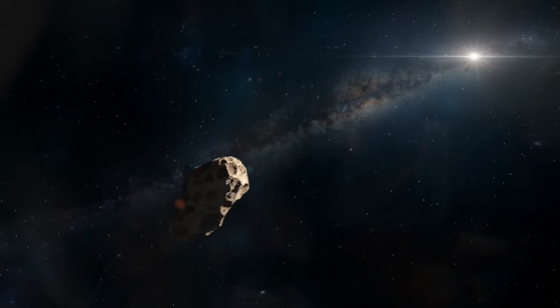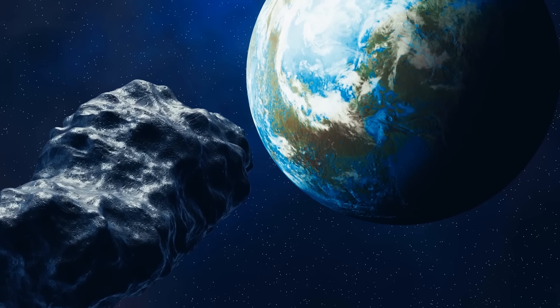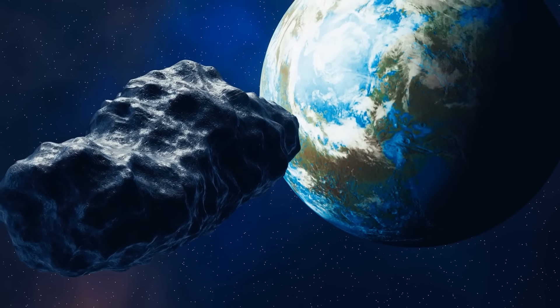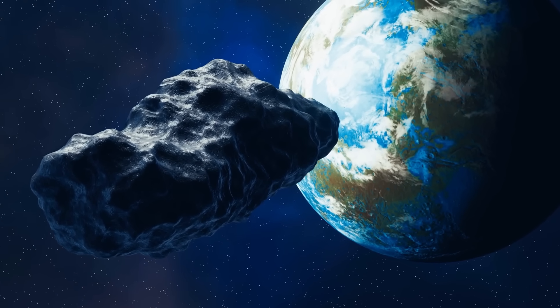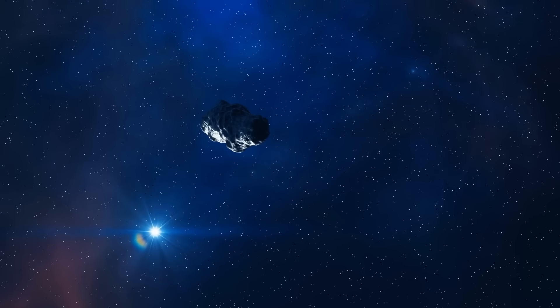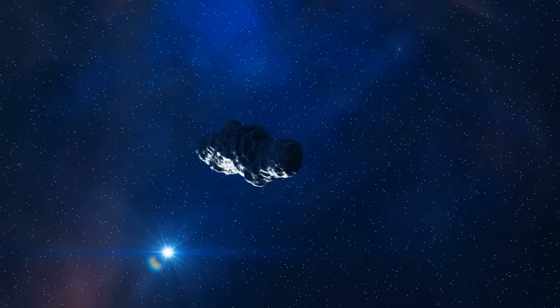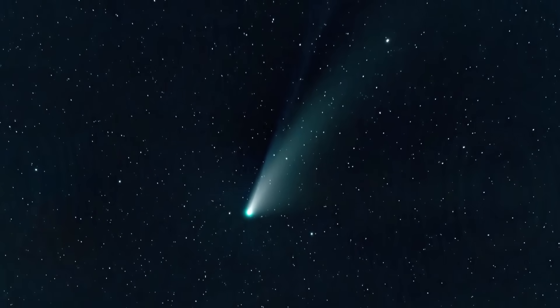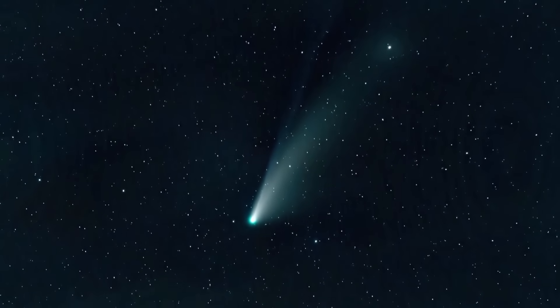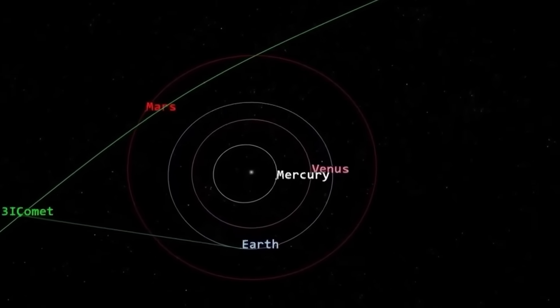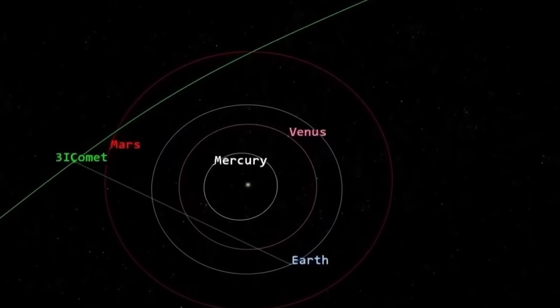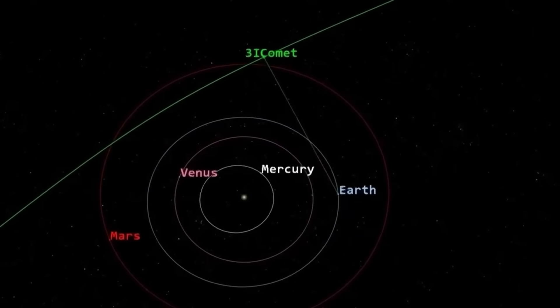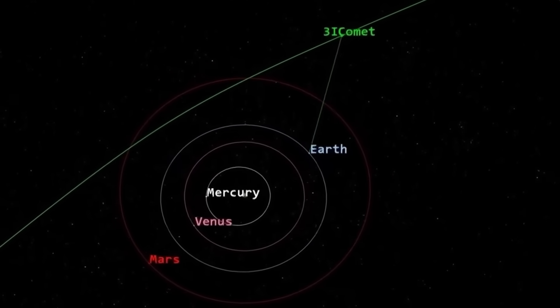That's the moment gravity stops being the whole story. Because if 3i Atlas were a dead rock, asteroid-style, gravity would be enough. Sun pulls. Planets tug. You predict the position precisely. But 3i Atlas is active. It vents gas. It throws dust. It runs jets. And every time material shoots out one way, the nucleus gets pushed the other way. That push is the non-gravitational force. A tiny rocket engine built out of sunlight and ice.